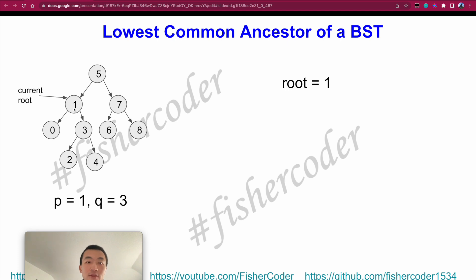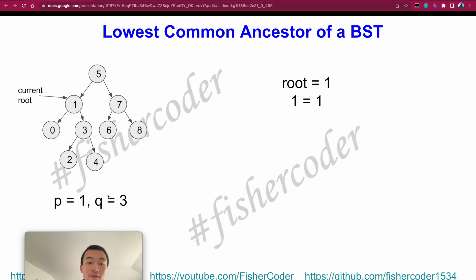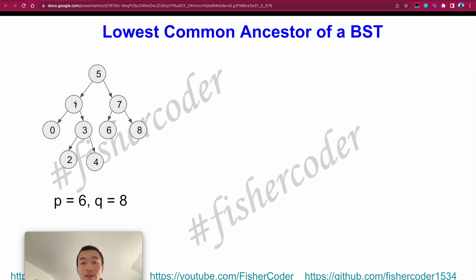Now the current root is 1. We do the same comparison logic against the current root. 1 is equal to p, which is 1. Since a node is a descendant of itself, we return root here. The other node is guaranteed to be either on the left or right side of this root node, but this root node is a descendant of itself, so we return root.